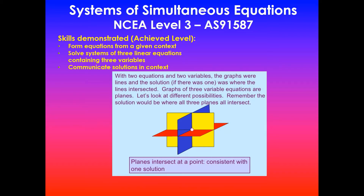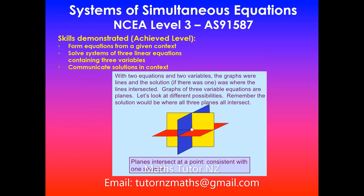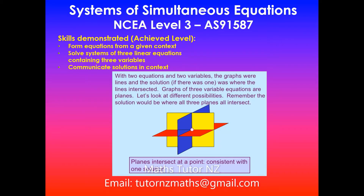In NCA levels 1 and 2 you may have done simultaneous equations involving two variables and two equations, and if the lines intersected there was a solution. In NCA level 3, graphs of three-variable equations are planes, and we'll be looking at different possibilities. In this video we'll be looking at a common intersection of the three planes that leads to a unique solution — a consistent system with independent equations.